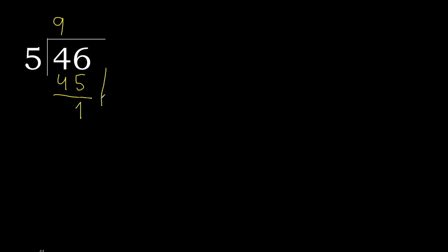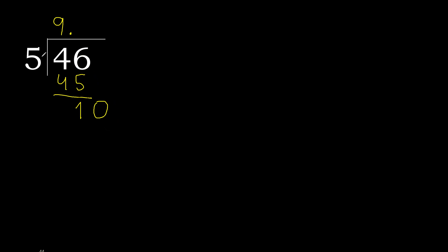Next, there is no number, therefore complete — always complete with 0. Here with a point. Ok? 0 point. 10. 5 multiplied by 2 is 10. 10 minus 10 is 0.